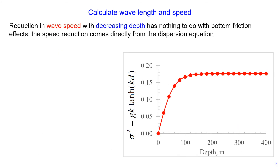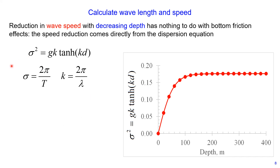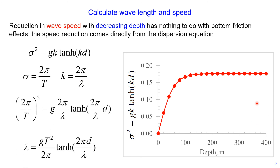Reduction in wave speed with decreasing depth has nothing to do with bottom friction effects. The speed reduction comes directly from the dispersion equation. Substituting the full equations for wave circular frequency (2π divided by wave period) and wave number (2π divided by wavelength), we modify the equation to obtain the full wavelength equation. Therefore, with reduction in water depth, the wave speed reduces, as shown schematically on the dispersion diagram.